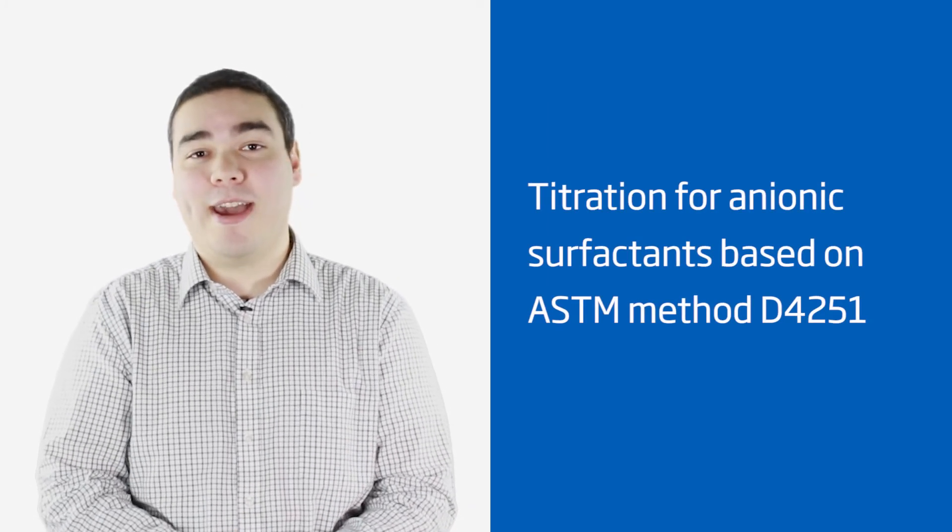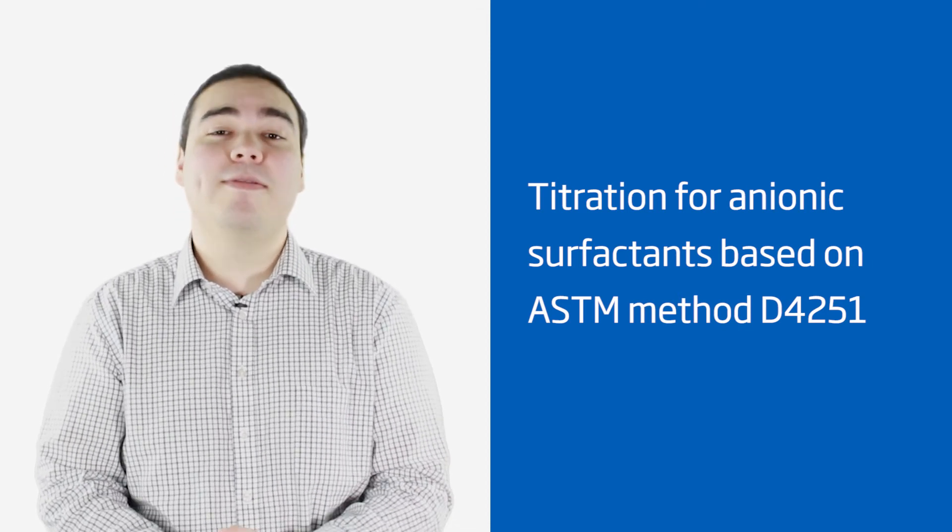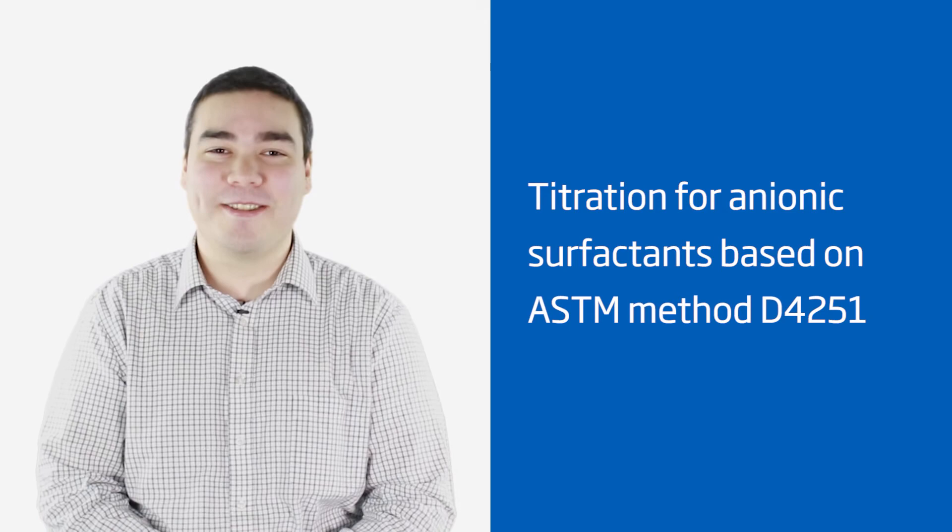Now, I'll show you how to run anionic surfactants. Anionic surfactants are found in soaps, detergents, and a wide range of other products. Our method for anionic surfactants is based on ASTM method D4251 and is very straightforward. So, let's get started.